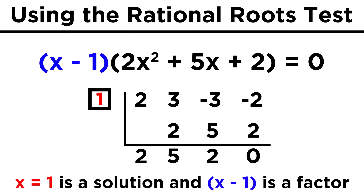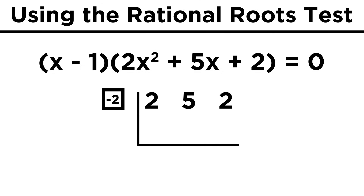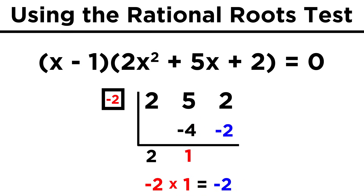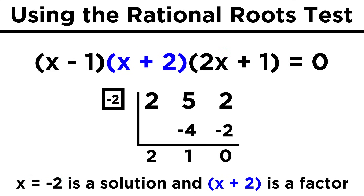But this one did work, so we could split up this cubic function into x minus one — since one was a solution — and then a quadratic function given by the coefficients here, which will be two x squared plus five x plus two. From there, we could go back to our list of zeros and try another. Perhaps negative two will work. So we can keep the same workspace, put a negative two here, drop the two down, and off we go. Negative two times two is negative four, five plus negative four is one, negative two times one is negative two, two plus negative two is zero. The zero means that this is a solution. So we can break this quadratic up into x plus two, since negative two is a solution, and the resulting binomial from synthetic division, two x plus one.